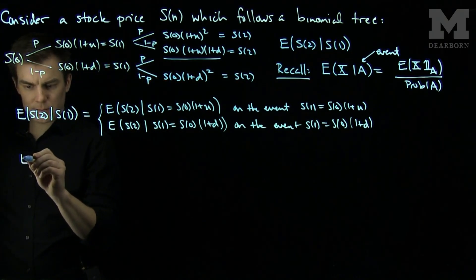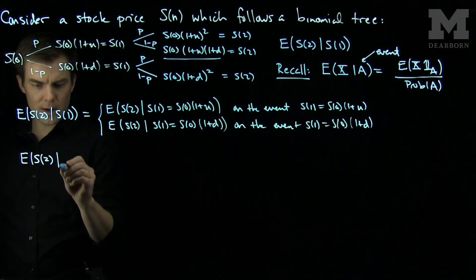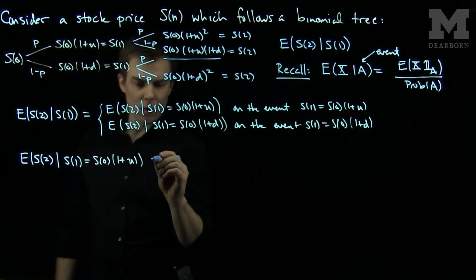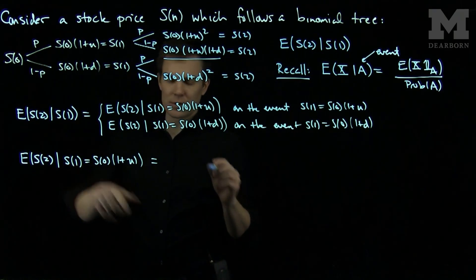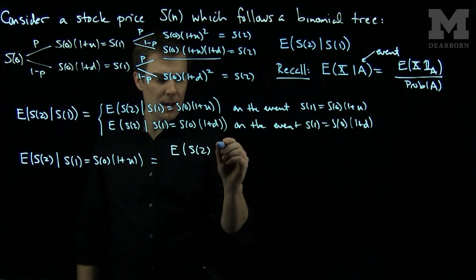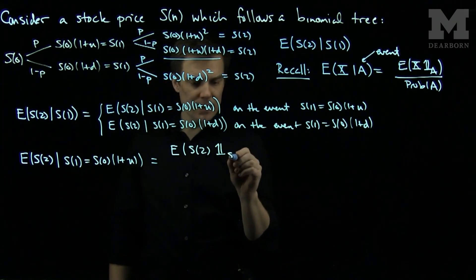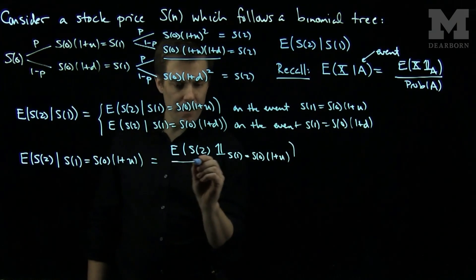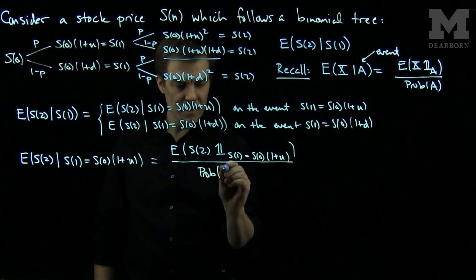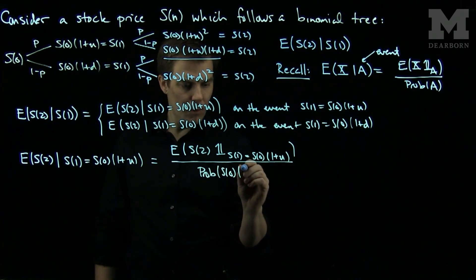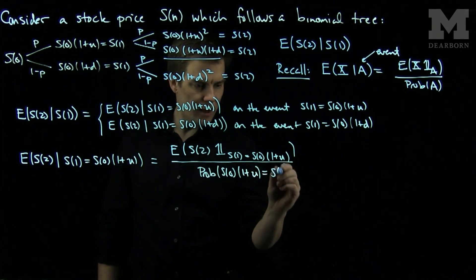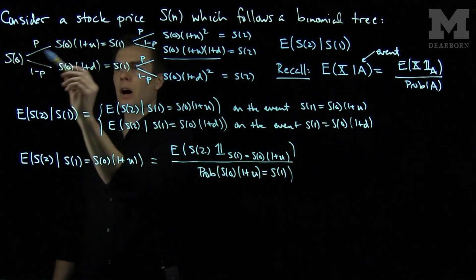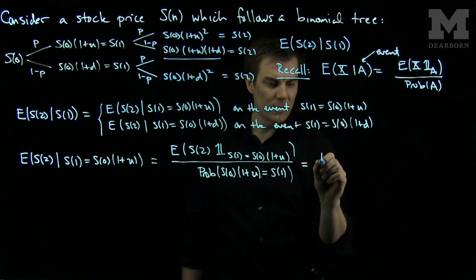To compute the conditional expectation of S2 given S1, we have that it will be the conditional expectation of S2 given the event S1 equals S0(1+u), or the conditional expectation of S2 given the event S1 equals S0(1+d). So now we compute: what is E[S2 | S1 = S0(1+u)]? The probability that S1 equals S0(1+u) is the up probability p, so everything will be divided by p.